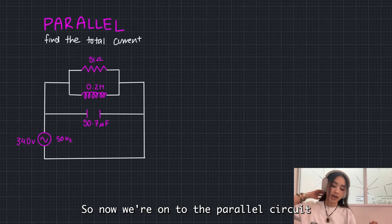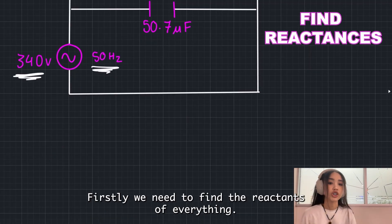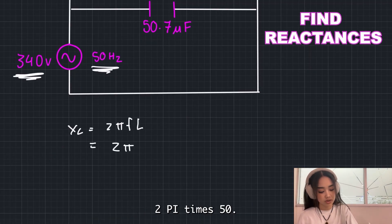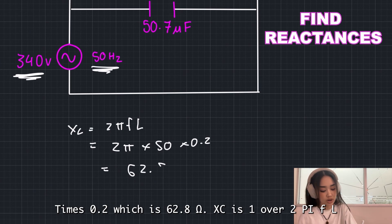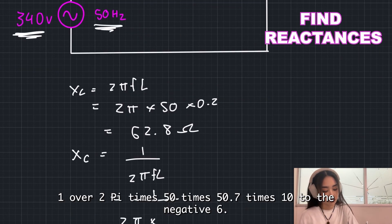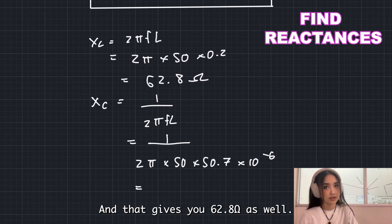So, now we're onto the parallel circuit, and we need to find the total current. Firstly, we need to find the reactance of everything. XL is 2 pi FL, 2 pi times 50 times 0.2, which is 62.8 ohms. XC is 1 over 2 pi FL, and that is 1 over 2 pi times 50 times 60.7 times 10 to negative 6, and that gives you 62.8 ohms as well.